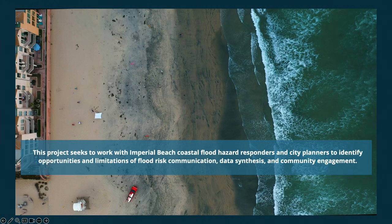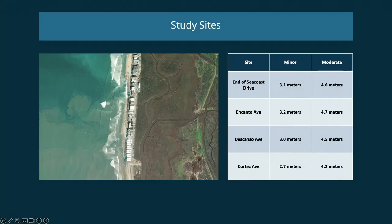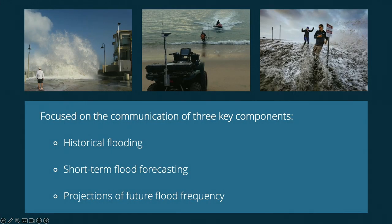With all this flood data being collected in Imperial Beach by Scripps, the goal is to work with stakeholders to respond to these flood hazards, identify opportunities to improve how we communicate projects and findings, and better share that information. This study focuses on four sites in Imperial Beach — at Seacoast Drive, Encanto Avenue, Descanso Avenue, and Cortez Avenue — where minor and moderate flood thresholds have been established. The assessment focused on three key components: historical flooding, short-term flood forecasting, and projections of future flood frequency.